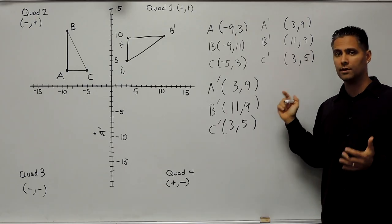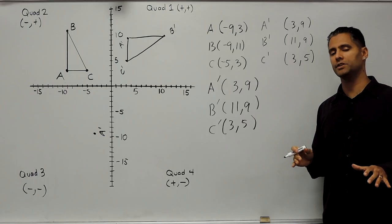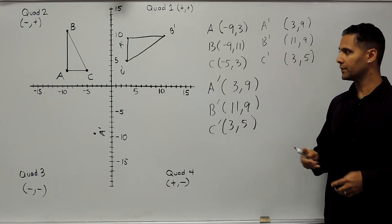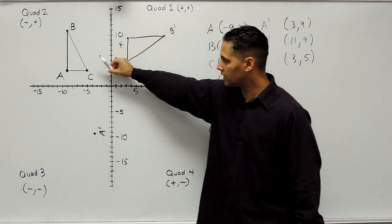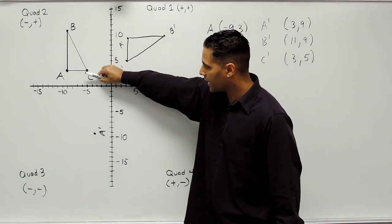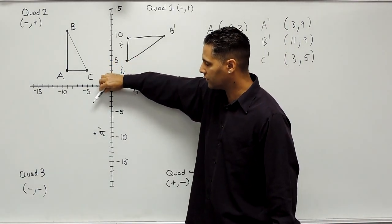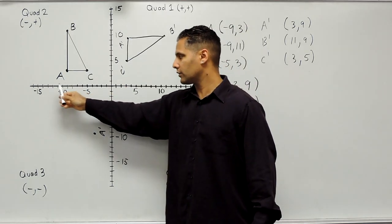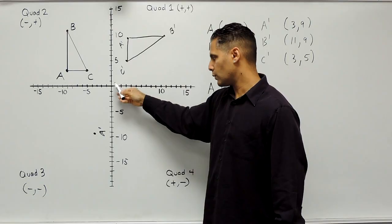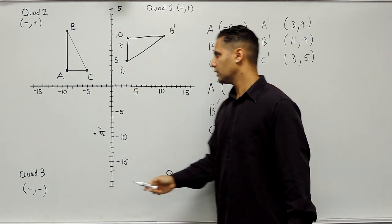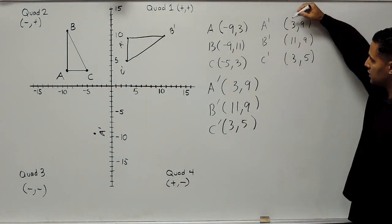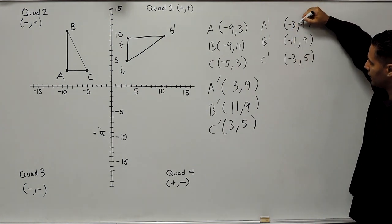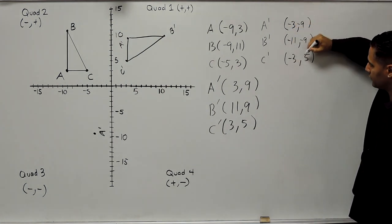Remember, after switching the numbers around for any 90 degree rotation, you next figure out what quadrant you are rotating to. We started in quadrant 2, and going 90 degrees counterclockwise puts us in quadrant 3. In quadrant 3, all x values are negative and all y values are also negative, so we change all of our x and y values to negative.